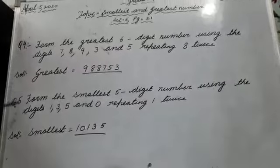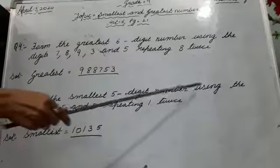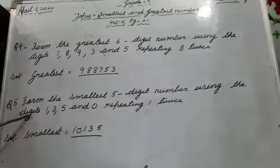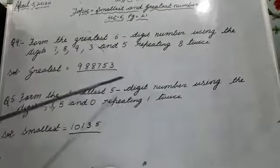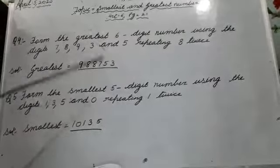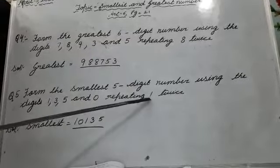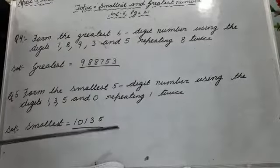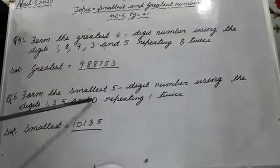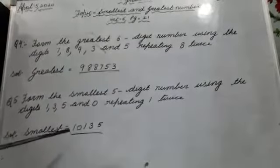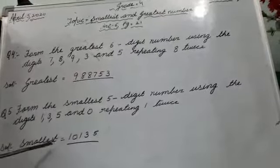Now question number 5: form the smallest 5-digit number using the digits 1, 3, 5 and 0, repeating 1 twice. You need a 5-digit number; 4 digits are given, so repeat 1 two times. Also, 0 is given — remember, place 0 in the second position from the start, not the first.